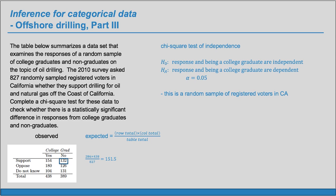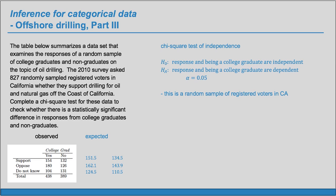If we want to find the expected count for another cell, we'll do the row total — which is still 286 — times the column total of 389, and divide by the table total. We can do that for each of the six spots, and we'll get our expected values. We can record those, and these are all greater than or equal to 5.